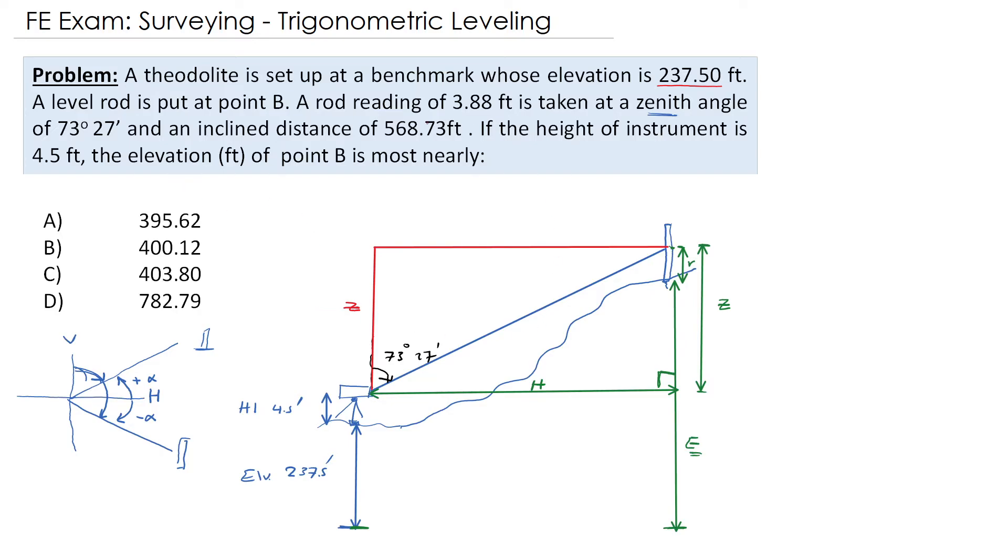So we know that this inclined distance is 568.73. Basically what we need to do first, if we look to the distance from here to here, this distance is basically the elevation of our benchmark plus the height of the instrument.